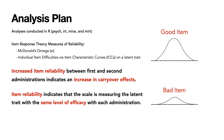We used McDonald's Omega. In psychological scales, there is a construct of reliability — how reliable your scale is when the same person takes it multiple times or different people in different populations. For example, when I took the SAT, my score did not change that much, and that's good. It shows that the scale is measuring what it should be measuring, not something extraneous.